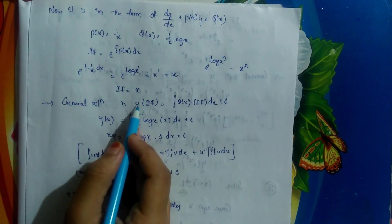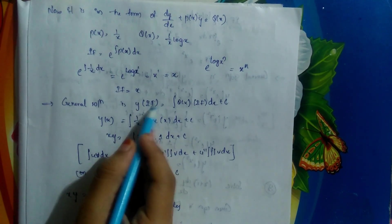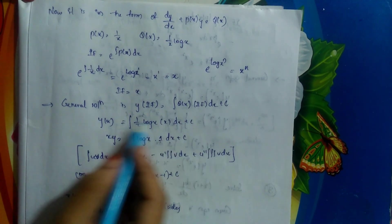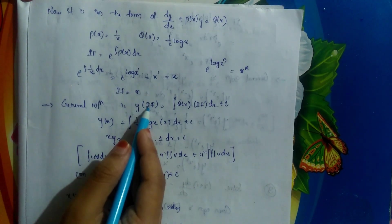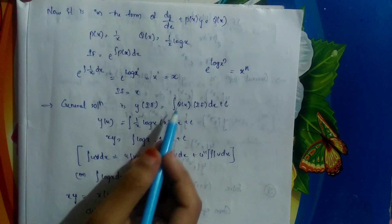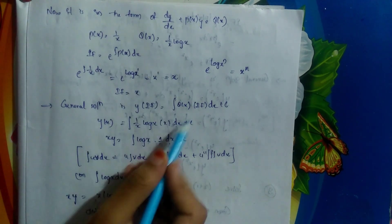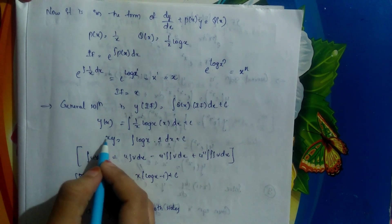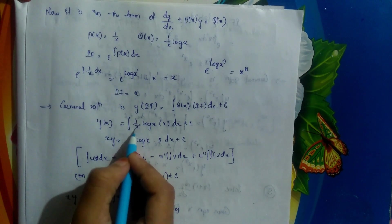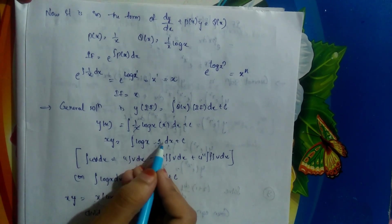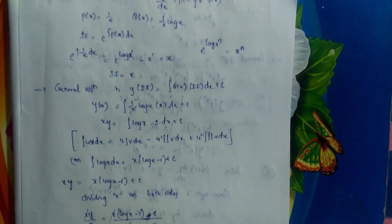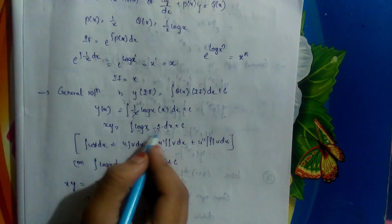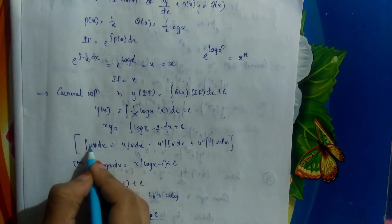Now we find the general solution: y times integrating factor equals ∫Q(x) times integrating factor dx plus c. Substituting: y·x equals ∫(1/x)·log x · x dx plus c. The x terms cancel, giving xy equals ∫log x · 1 dx plus c. To integrate log x, we can use the integration by parts formula: ∫u·v dx equals u·∫v dx minus derivative of u times double integral of v, and so on.